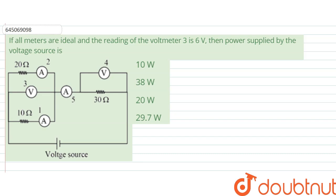The question says that if all meters are ideal and the reading of the voltmeter 3 is 6 volt, then what is the power supplied by the voltage source? What is the power of this voltage source?